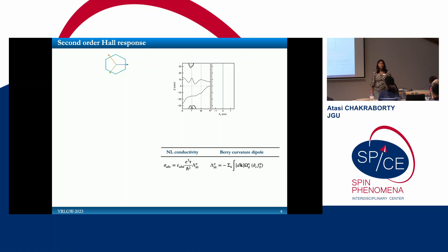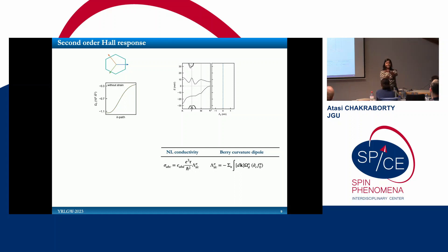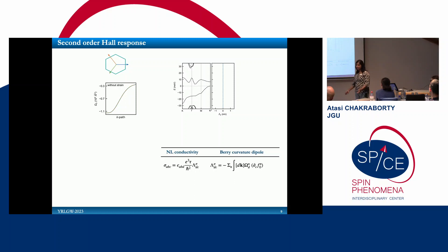We calculated the nonlinear Hall conductivity using the Berry curvature dipole, but obtained identically zero. The missing piece is crystal symmetry: the pristine twisted double bilayer graphene has C3 symmetry. In the three C3-symmetric parts, the Berry curvatures lie on top of each other, and when integrating Berry curvature times velocity, the velocity sum rule causes cancellation.